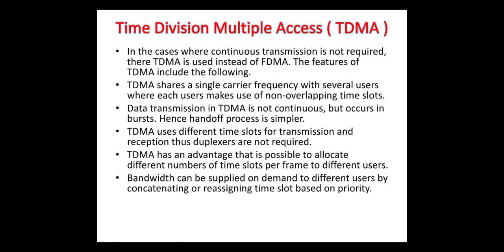In TDMA, there is a single carrier frequency which is shared by several users, where each user makes use of non-overlapping time slots. Data transmission is not continuous in TDMA but occurs in bursts. Hence the handoff process is simpler. TDMA uses different time slots for transmission and reception, thus duplexers are not required.